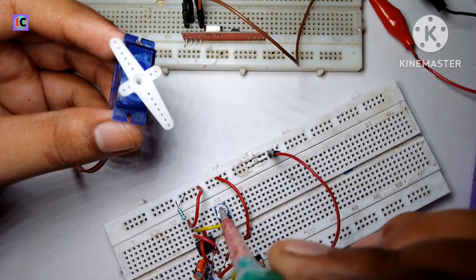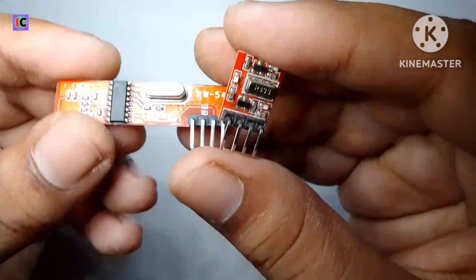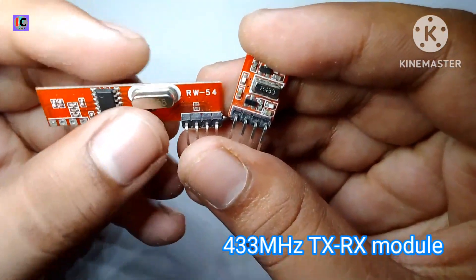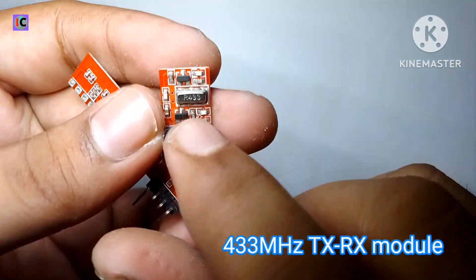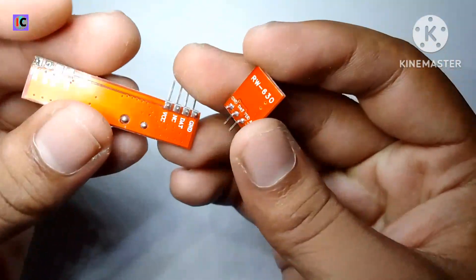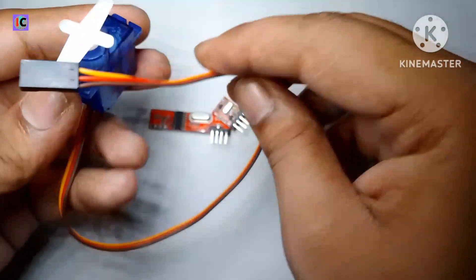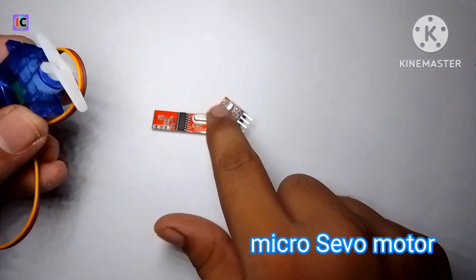Hey guys, welcome to my channel. In this video we are going to make a wireless servo motor controller using this 433 megahertz transmitter and receiver, and without using any kind of microcontroller. It's a very simple circuit.